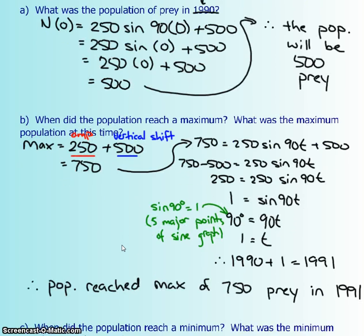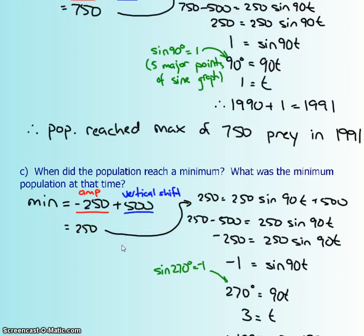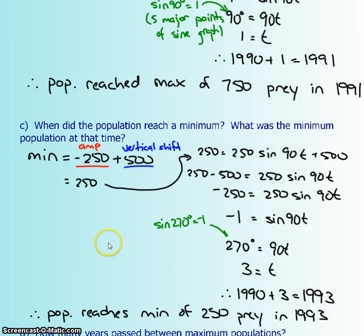What we're going to do now is we're going to try and find a minimum. When did the population reach a minimum and how many prey was that minimum? Again, the amplitude has a negative 250 as your minimum, but then it's been vertically shifted up 500. So we're just going to add those two together and it looks like the minimum number of prey is 250.